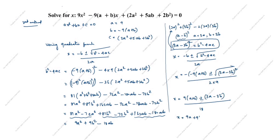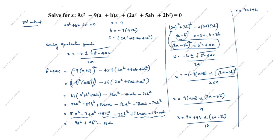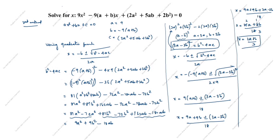Taking the plus sign first: x = (9a+9b + 3a−3b) / 18 = (12a+6b) / 18. Simplifying by dividing numerator and denominator by 6: x = (2a+b) / 3. This is the first x value.